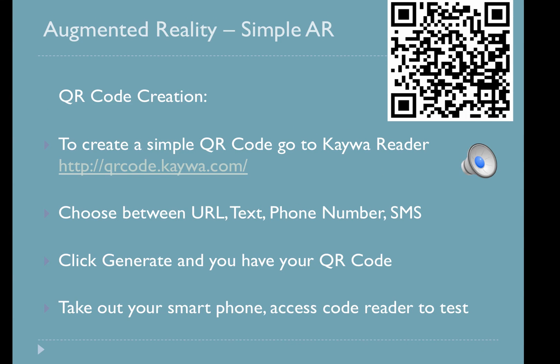Now that you've downloaded a code reader, it's time to create a code. To create a simple QR code, go to Kaywa at http://qrcode.kaywa.com. Once you are there, choose between URL, text, phone, or SMS. Put in the information and simply click generate — and there you have your QR code. Now take out your smartphone, access your code reader, and test to see that it works. You've just created a very simple augmented reality application.